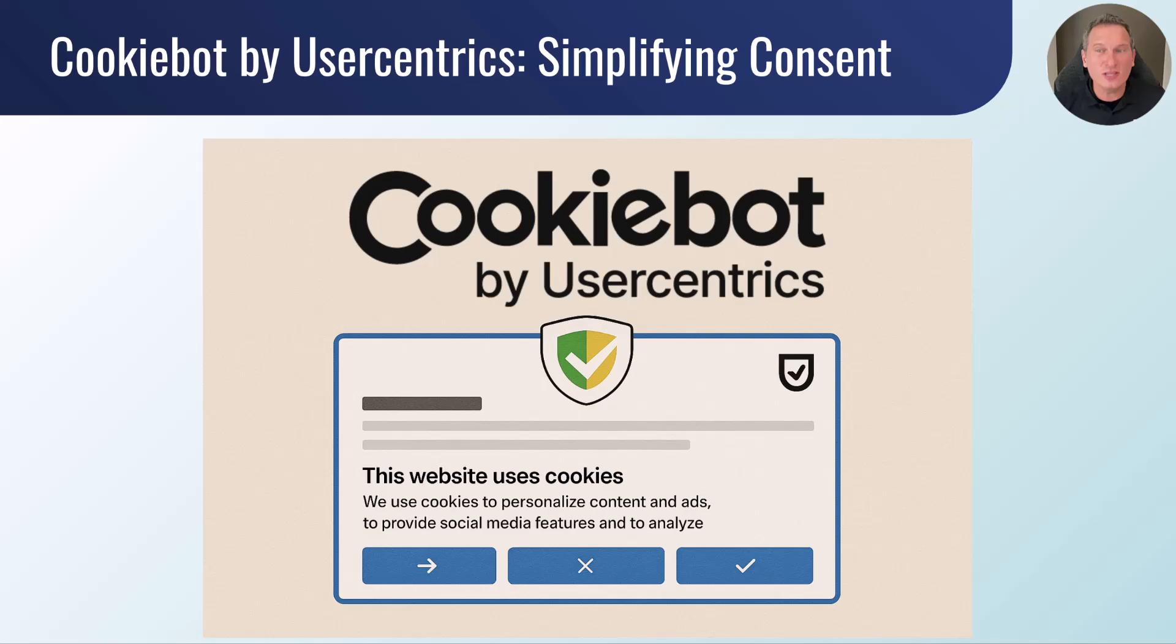And this is where tools like CookieBot by UserCentrics come in. CookieBot helps website owners scan all the cookies on their website, categorize them, and then create a consent banner that gives visitors real choice over their data. It makes the process easy, ensuring that businesses can stay compliant with privacy laws.